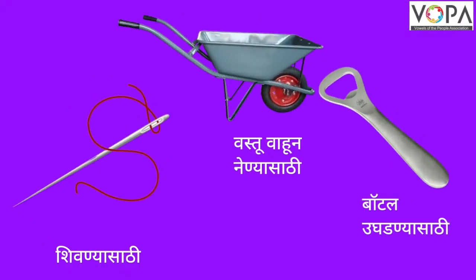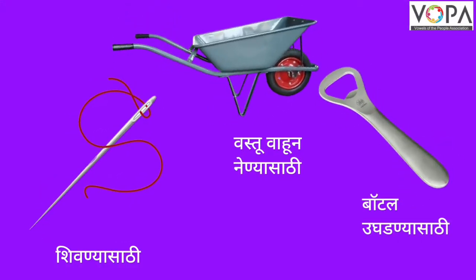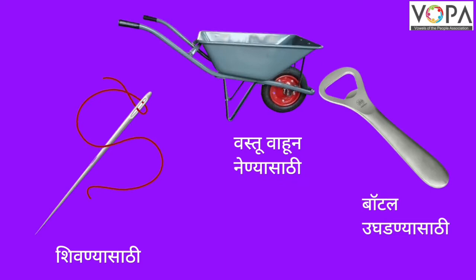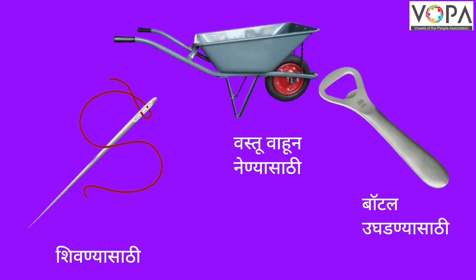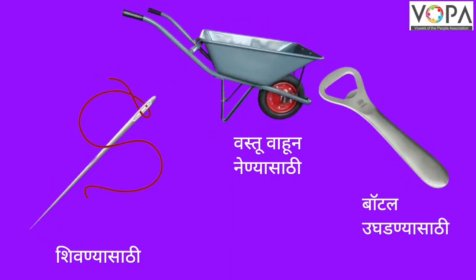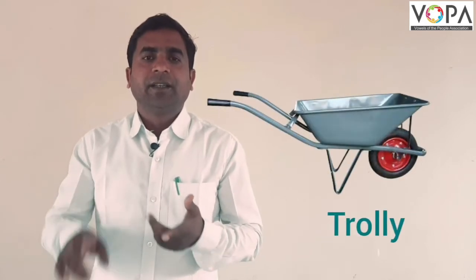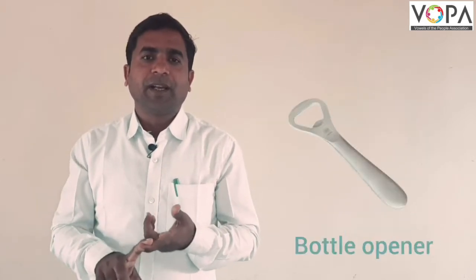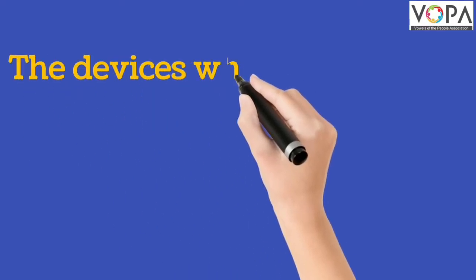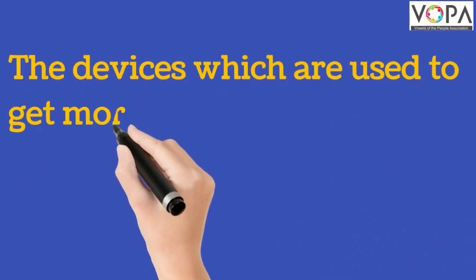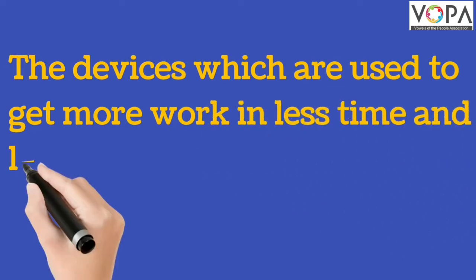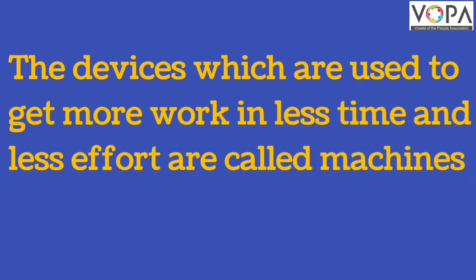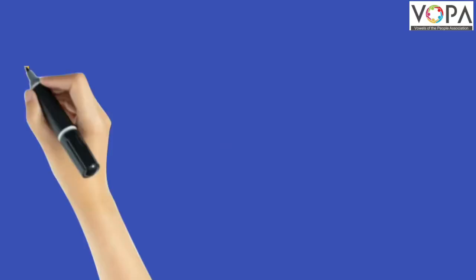Look at these pictures. In these pictures, various devices are used in various tasks — needle, trolley, bottle opener, etc. A device which is used to get more work done in less time and less effort is called a machine.